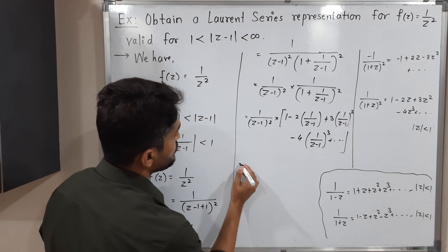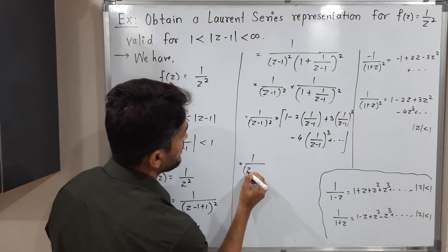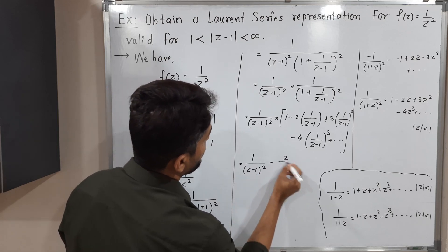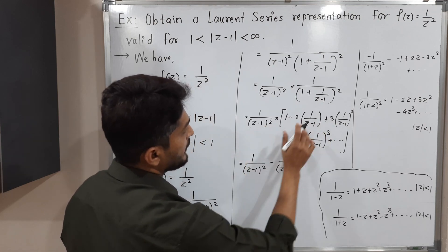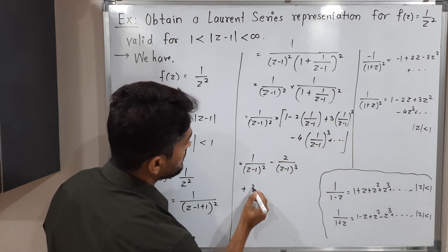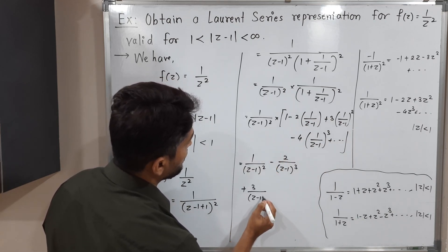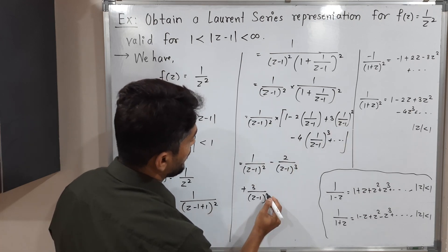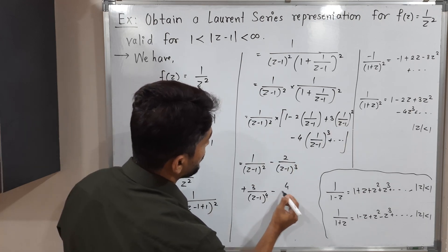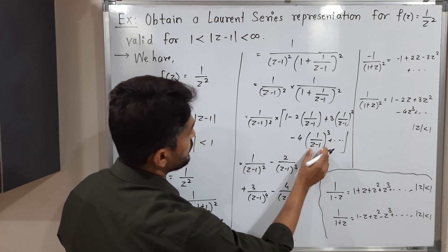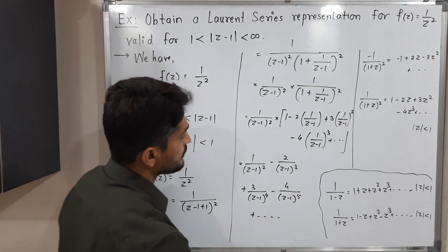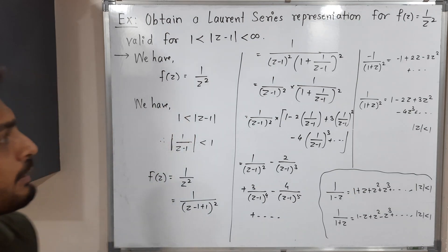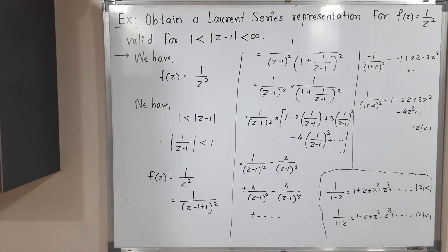Multiplying each term by 1/(z-1)², the required Laurent expansion is: f(z) = 1/(z-1)² - 2/(z-1)³ + 3/(z-1)⁴ - 4/(z-1)⁵ + ... This is the required Laurent expansion of the given function f(z) = 1/z² in the given domain 1 < |z-1| < ∞. You can take a screenshot of this result. Thank you, see you.